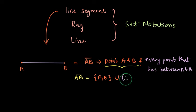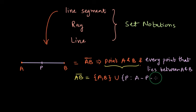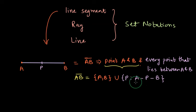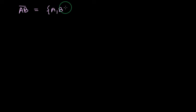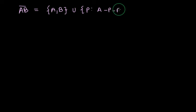Let's consider there is some point P anywhere between A and B. Point P is such that P is between A and B. The notation A–P–B means that point P is between A and B. When we say point P is between A and B, all three points are collinear — remember that. So the full set notation for segment AB is: {A, B} union every point P such that P is between points A and B.